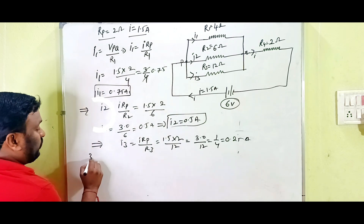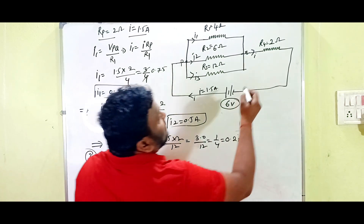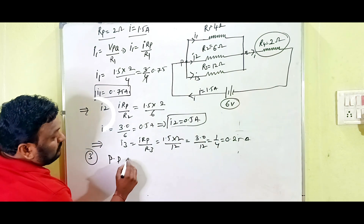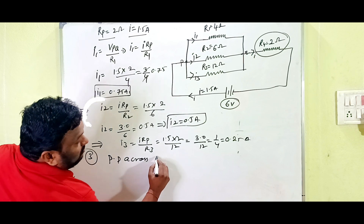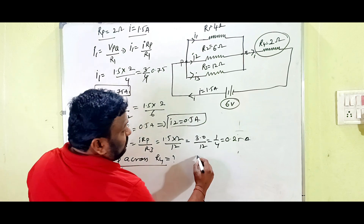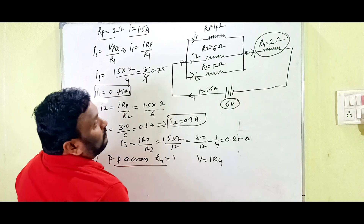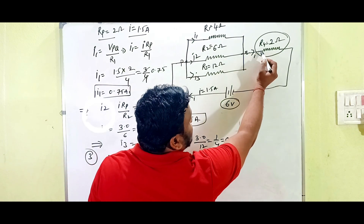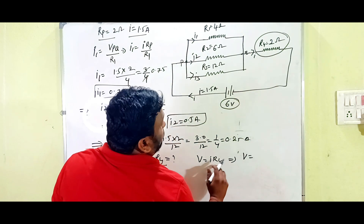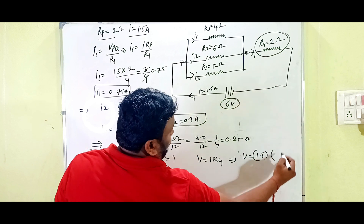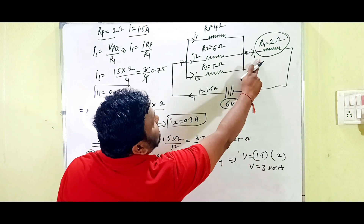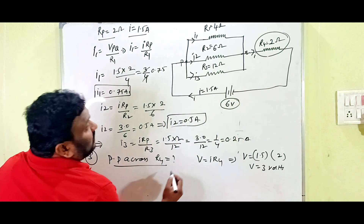Now we find the potential difference across the fourth resistor R4. Using V = I × R4: the current through R4 is I = 1.5 amperes and resistance is 2 ohms, so V = 1.5 × 2 = 3 volts. The potential difference across R4 is 3 volts.